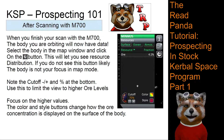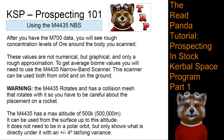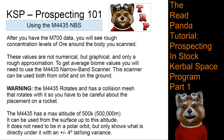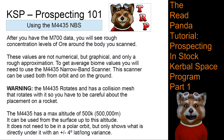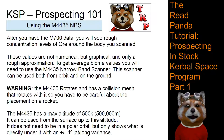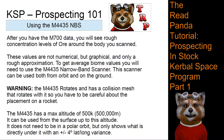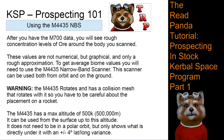After using the M700, you will see rough ore concentrations on the body you scanned. These are approximate and graphical, giving you a rough idea of where you need to go. To get the average biome values, you need to pull out the M4435 Narrowband Scanner. When you finish your M700 scan, select the body you're orbiting, go to the map window, click the resource distribution button, and then adjust the cutoff and color to focus on the highest concentrations.